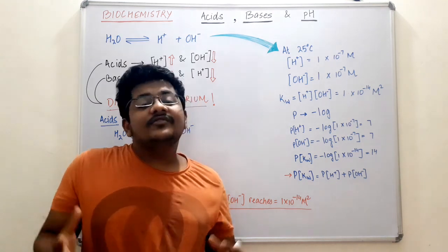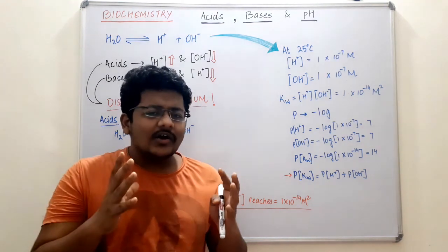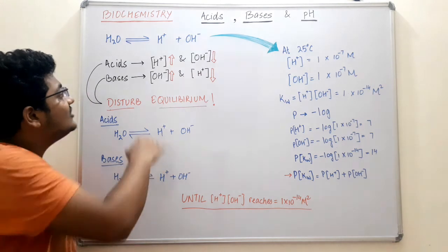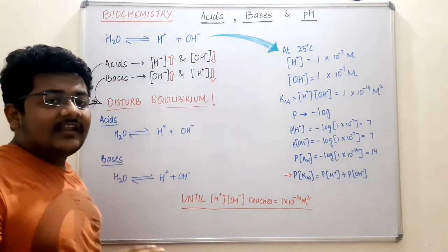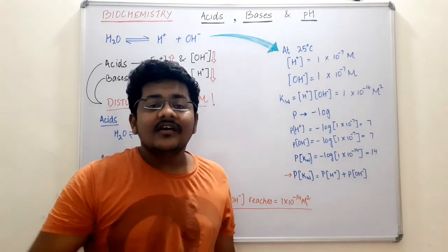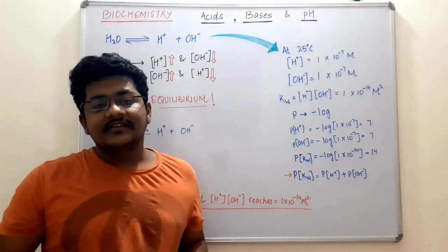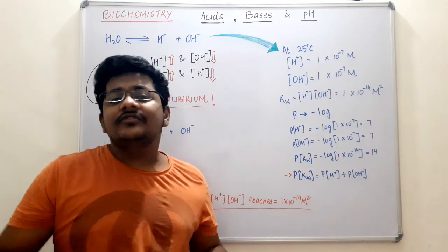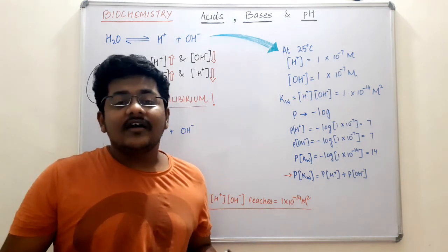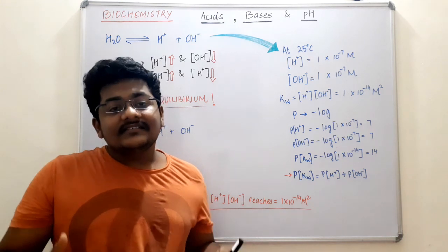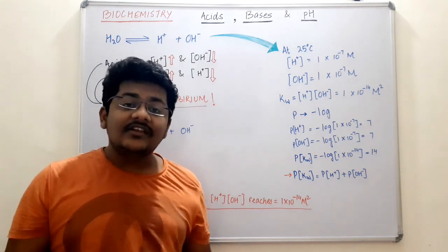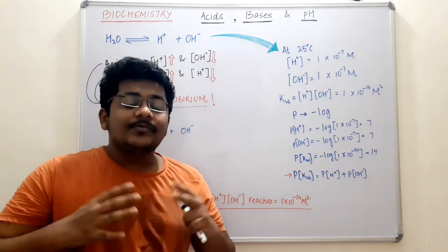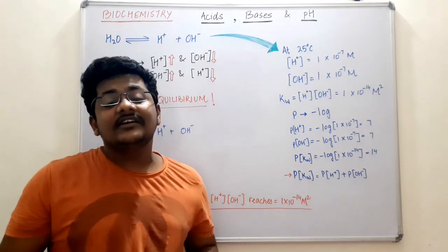We know that 70% of our body weight is water, and this water auto ionizes. H2O auto ionizes to form hydrogen ions and hydroxide ions. Depending on the concentration of hydrogen ions, many biomolecules behave differently. For example, amino acids — if the hydrogen ion concentration is very high, amino acids are going to have a different structure, and if it is very low, they have a different structure. That is why protein structures change depending on the hydrogen ion concentration of the environment.